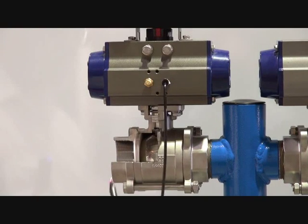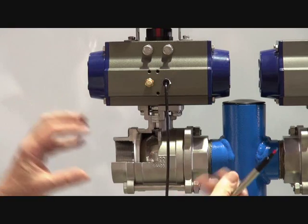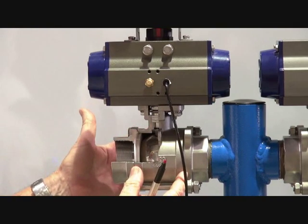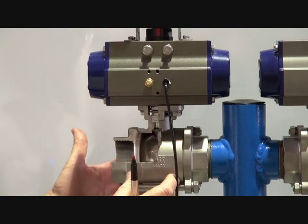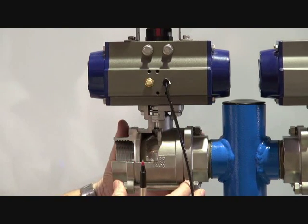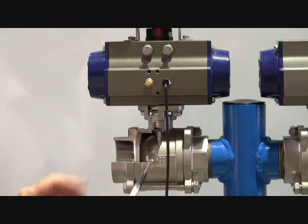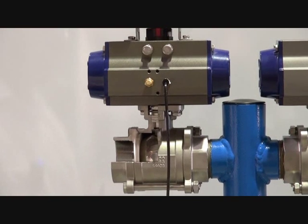The three-piece ball valve has the tie rods here, so you can undo the tie rods themselves. The two ends remain in the pipework and you can swing out the center cartridge with the actuator if necessary. Slide another cartridge in, put the four tie rods back in again, and it means that you don't disturb the pipework and the unit can be replaced very easily. Great maintenance and a very quick assembly.